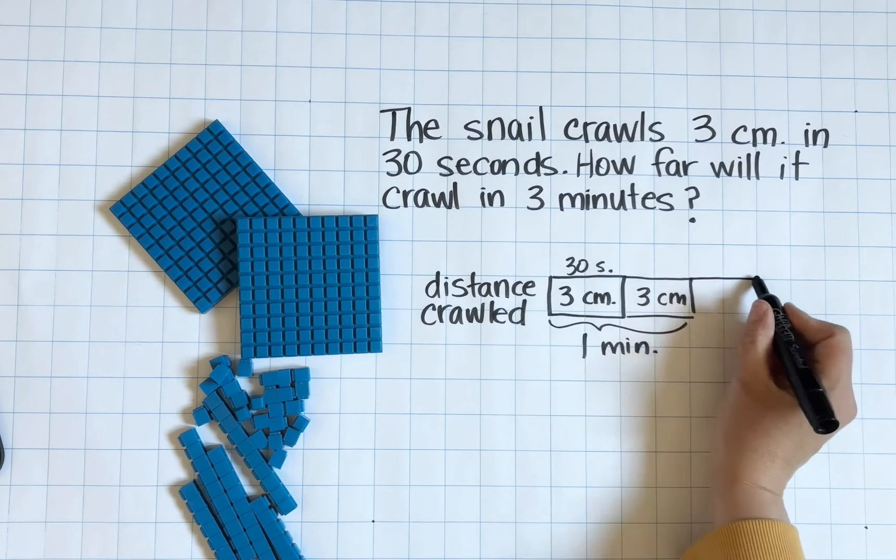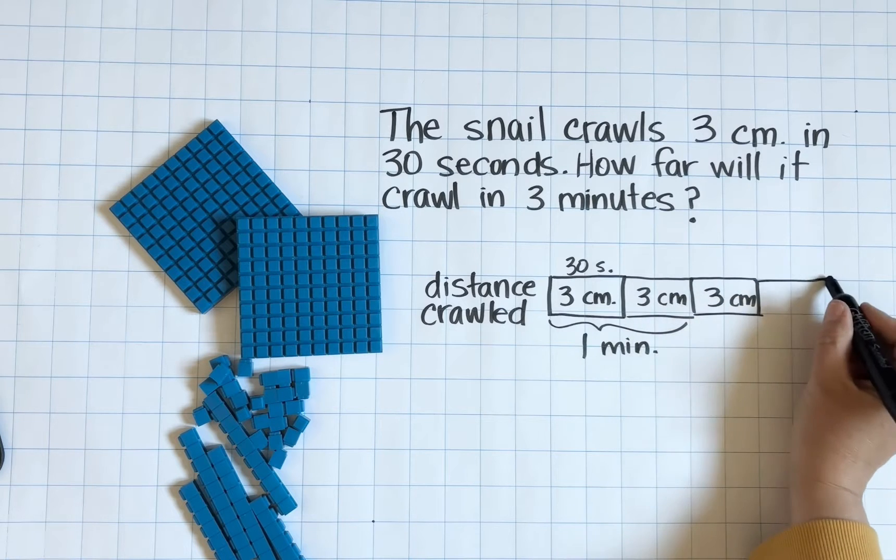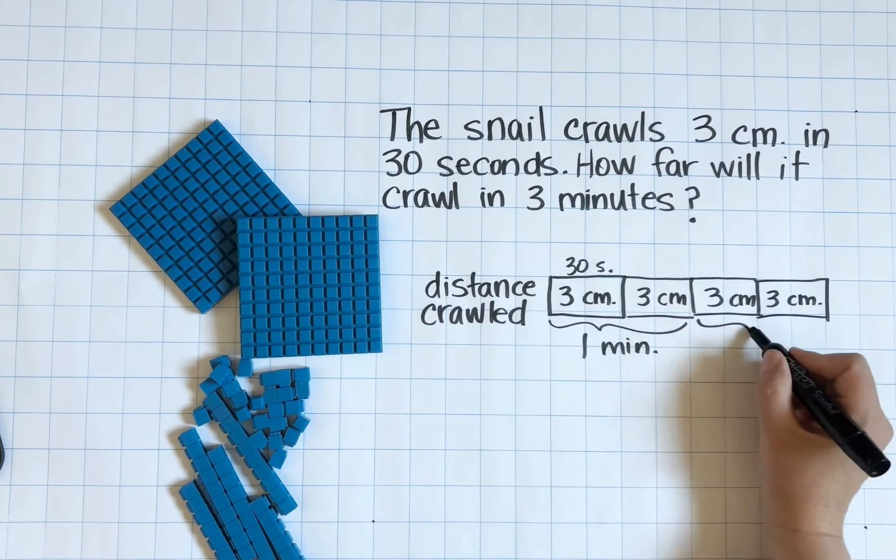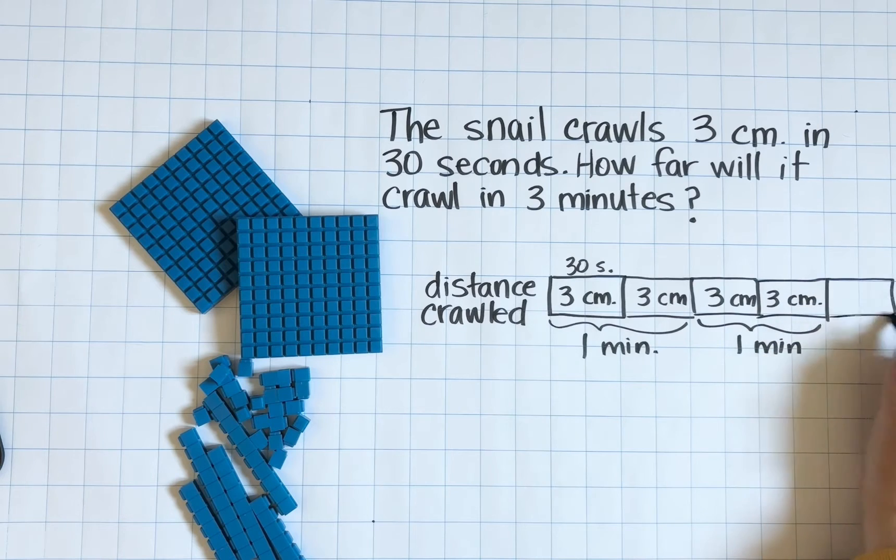So I know that two of those parts is going to equal one minute. Now it becomes clear that the snail can go six centimeters in one minute.